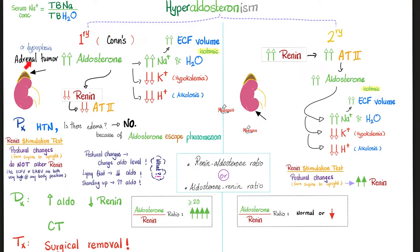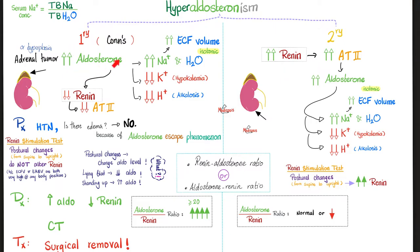In primary hyperaldosteronism, the adrenal cortex — possibly due to a tumor or hyperplasia — releases excess aldosterone, which reabsorbs salt and water. The serum sodium concentration usually stays the same because both sodium and water are reabsorbed proportionally. What does increase is extracellular fluid volume, which suppresses renin. Additionally, aldosterone causes potassium excretion, leading to hypokalemia, and hydrogen excretion, leading to metabolic alkalosis.